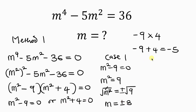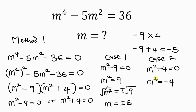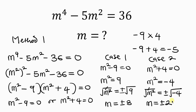Now let's go to case 2. For case 2, we have m squared plus 4 to be equal to 0. I'm going to be moving 4 to the right-hand side, so that we have m squared equal to negative 4. Now let's get rid of this square by taking the square root of both sides — plus or minus the square root of negative 4. The square root cancels out the square, leaving behind m equal to plus or minus 2i, which is a complex number. So we have 4 solutions for m: 2 are real solutions and 2 are complex solutions.